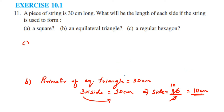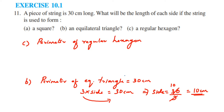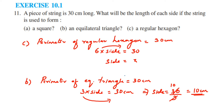For the third shape: perimeter of regular hexagon = 30 cm, and the formula is 6 × side = 30 cm. Transposing 6 to the other side gives side = 30 ÷ 6. Since 6 × 5 = 30, therefore side = 5 cm.